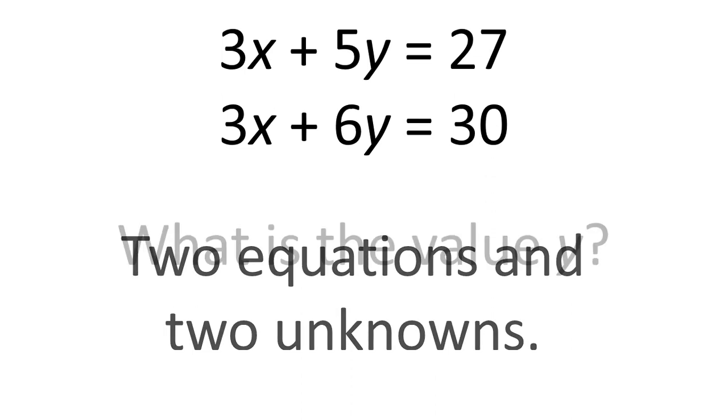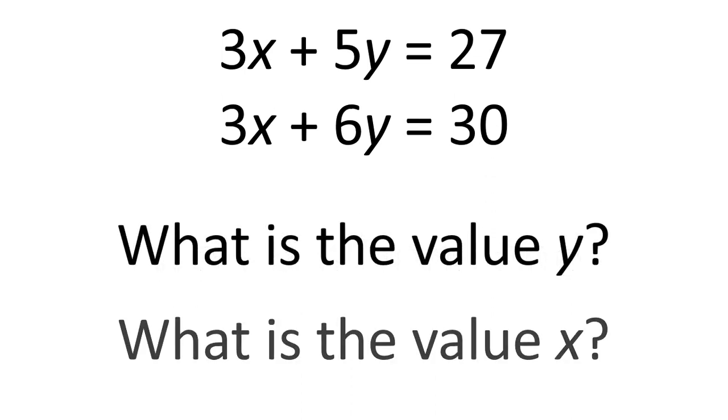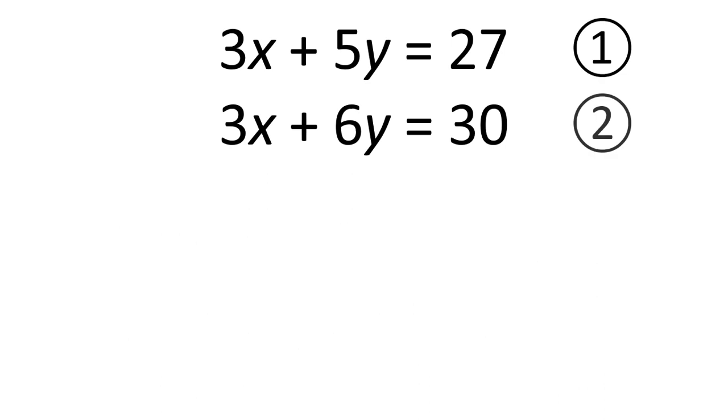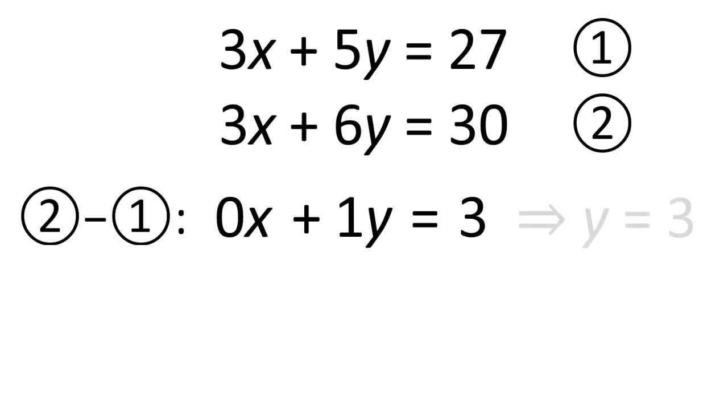We've got two equations and two unknowns, and we want to know the value of y and the value of x. If we label these equation 1 and equation 2, then subtract equation 1 from equation 2: 3x take away 3x is 0x, 6y take away 5y gives us 1y, and 30 take away 27 gives us 3, so y equals 3.